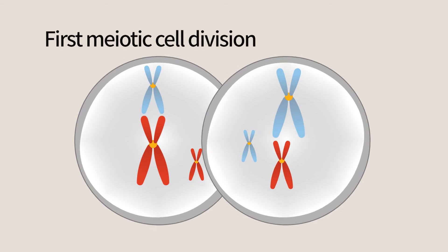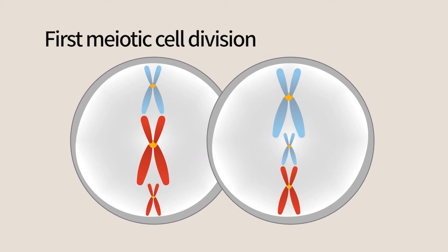From this first meiotic division, we get two cells, each containing one set of homologues, each with two sister chromatids.